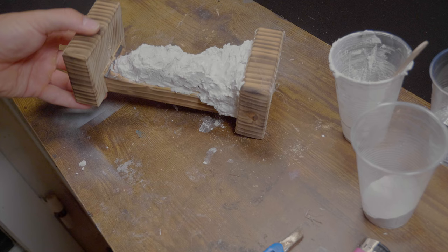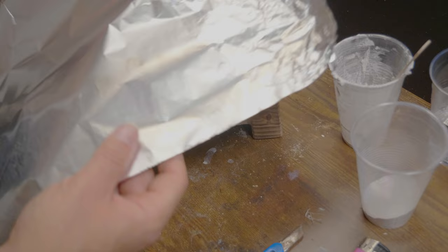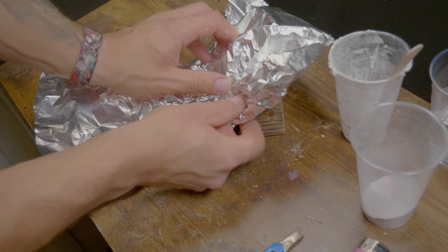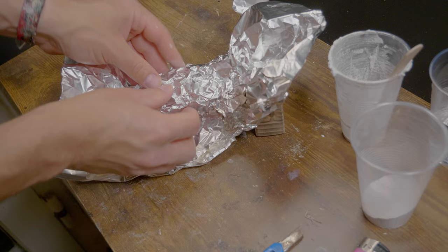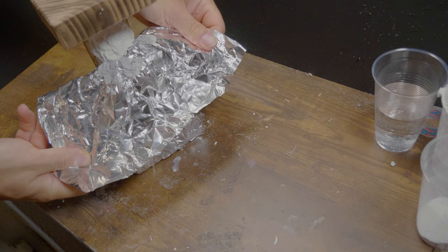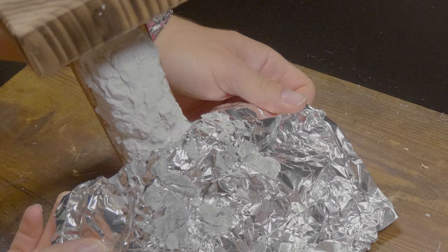As long as the plaster is still wet I take a piece of aluminum foil, crumble it slightly and then carefully cover the plaster with it. Then it's a matter of waiting. A pretty good trick for a natural rock structure.